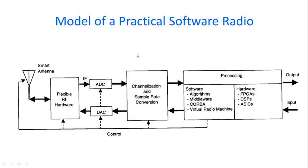Being in the digital domain, we will be able to process it in the software itself. Channelization and rate conversion is done, after which further processing is done in the software through algorithms, middleware, or core bar virtual radio machine using the help of hardware. The hardware would be FPGAs, digital signal processors, or application-specific integrated ICs. Then after which it will be the output — it is a receiver — and it is taken up for further processing. The path followed by the receiver software radio would be from the antenna through the flexible RF hardware through the ADC.